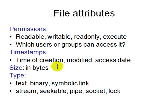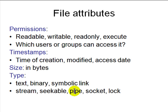Files can be of many different types: a text file (ASCII), a binary file like a program, or a symbolic link pointing to another file. They can also be seekable streams — meaning you can jump to any part of the file — or a pipe, where data comes in from elsewhere. A socket is a connection to an internet TCP/IP or other protocol. A lock file is used when two programs need synchronization — programs look at the lock to decide who has the right to do what.